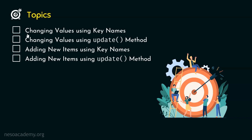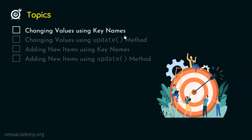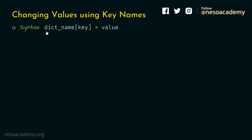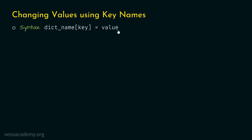Let's get started with the first topic: changing values using key names. How do we change a specific value using its key? We can do that by following this syntax. First, we need to type the name of the dictionary. Then within square brackets, we can specify the key whose value we want to update. And then after the assignment operator, we can provide the new value.